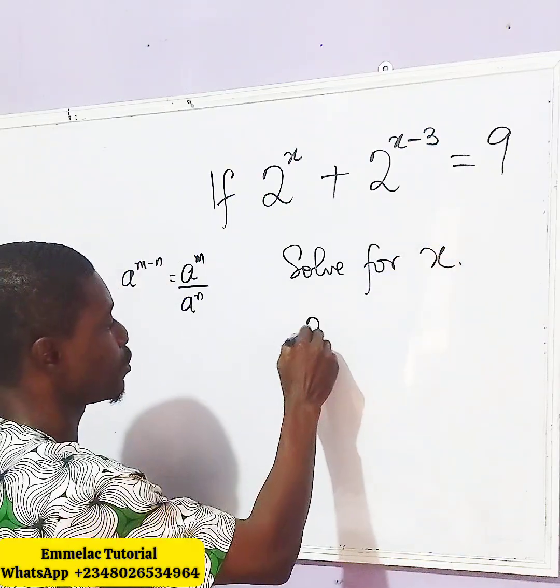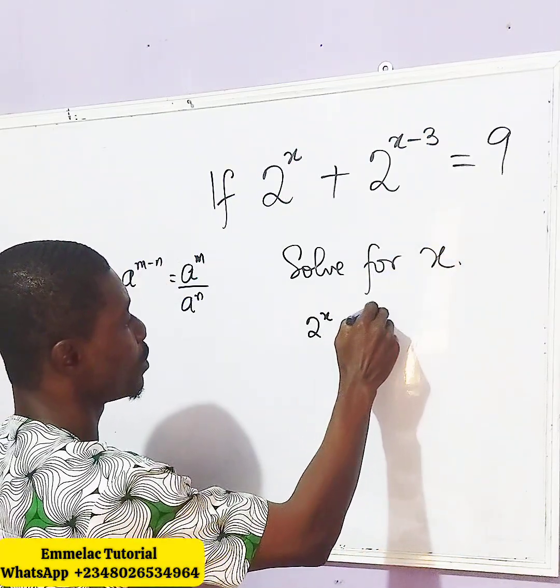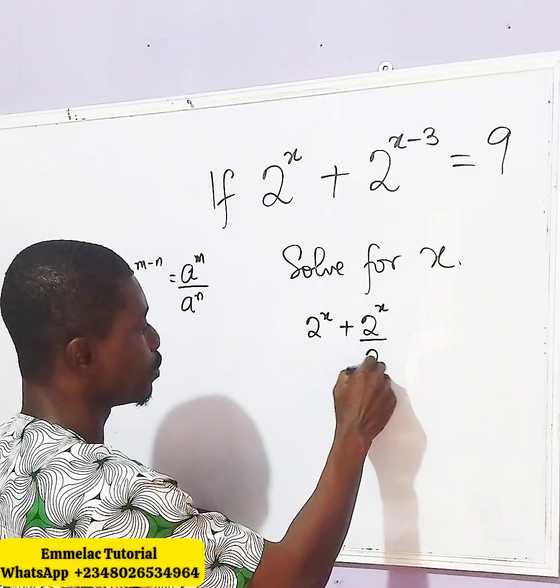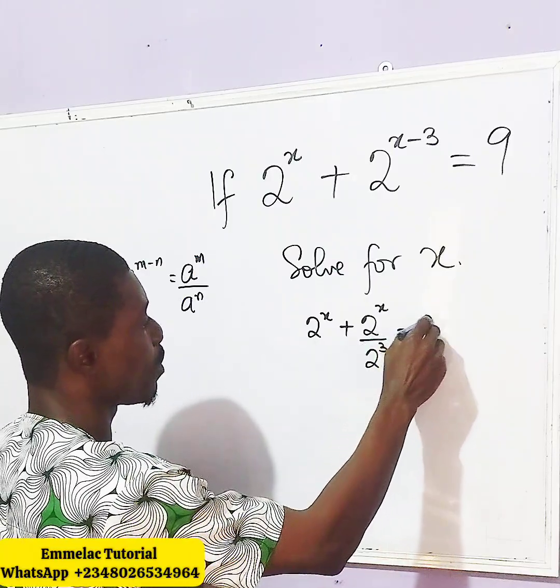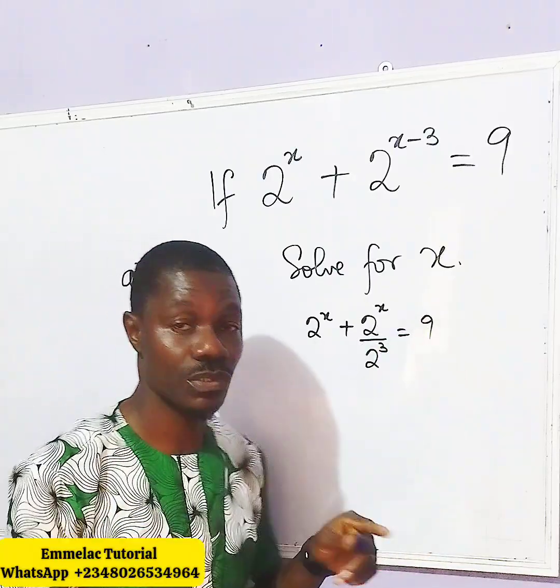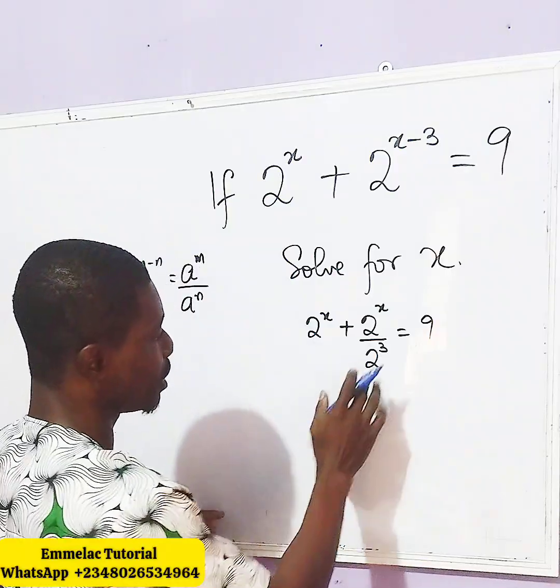I'll be having 2 raised to x plus 2 raised to x all over 2 raised to 3, then equals 9. And we know that 2 raised to 3 is 8. So, let's do this.